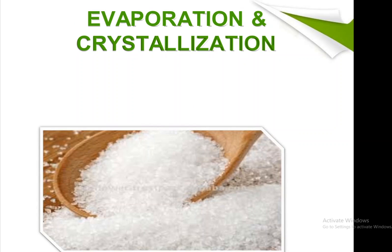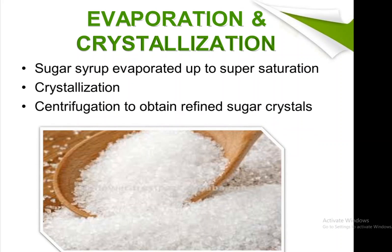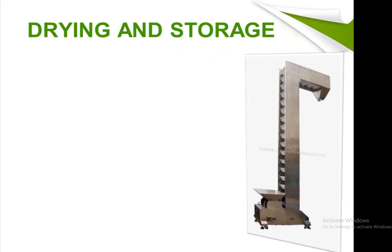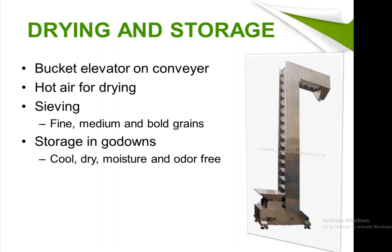After decolorization, the next process is evaporation and crystallization, where sugar syrup is evaporated to a supersaturated solution, crystallization is performed as before, and centrifugation yields refined sugar crystals. These are then sent for drying and storage, where a bucket elevator is used and hot air dries the crystals.